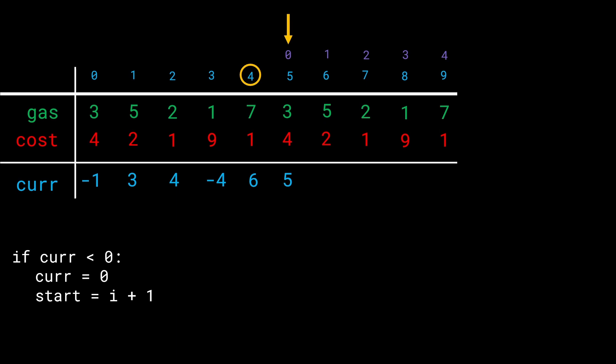Continuing from station 5 (which is station 0) with 5 units: 5 + 5 - 2 = 8, then 8 + 2 - 1 = 9, then 9 + 1 - 9 = 1. Now we're about to move to the next station — and we realize we've reached station number 9, which is actually station 4 behind the scenes. We've gone through an entire loop.